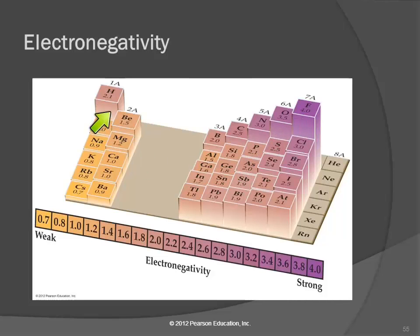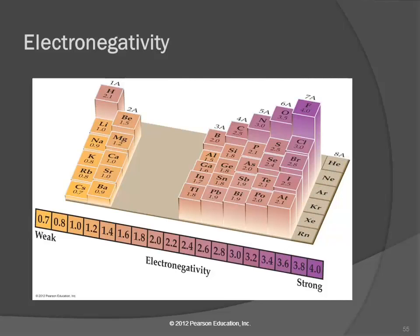Hydrogen is an exception and doesn't really follow that trend. The noble gases over here aren't included - they have a full electron shell and really don't form bonds. Electronegativity has to do with covalent bonds, and noble gases form almost no compounds, so we ignore them when we talk about electronegativity.